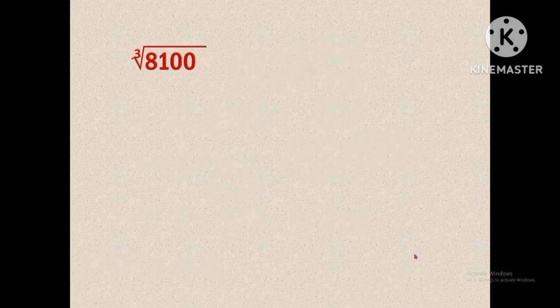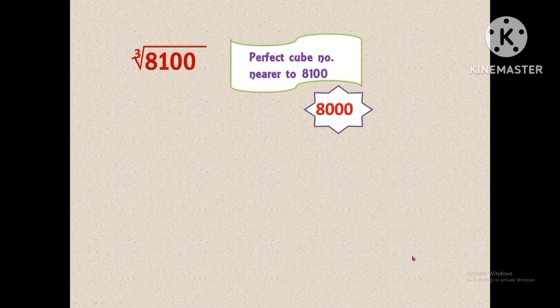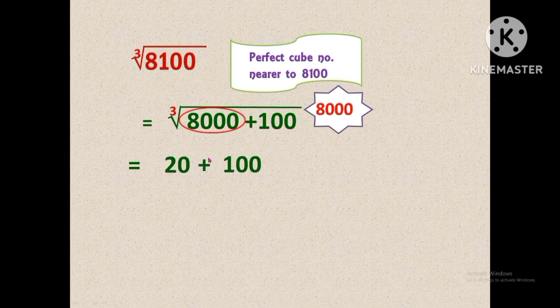Now we are going to find the cubic root for the number 8,100. We have to find the perfect cube number nearer to 8,100, which is 8,000, because 20 × 20 × 20 is 8,000. Next, we rewrite 8,100 as 8,000 plus 100. We then find the cubic root for the number 8,000, which is 20. We write 20 plus 100 divided by — in the denominator we add 3 into.